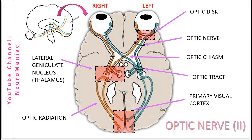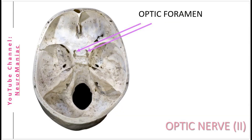To understand the orientation better, pretend we've grabbed the brain out of the skull and flipped it upside down. Now, in context of the cranial cavity, the optic nerve enters the cranial cavity via the optic foramen.